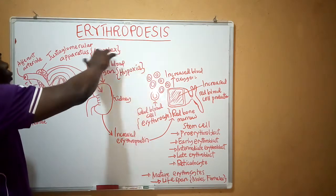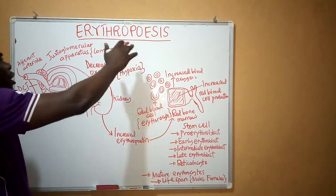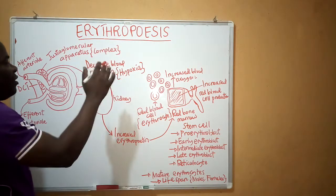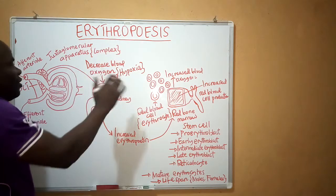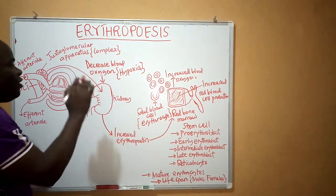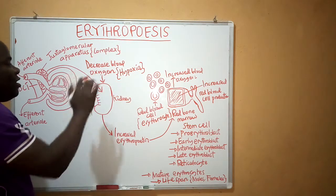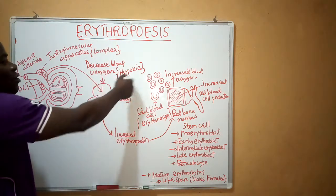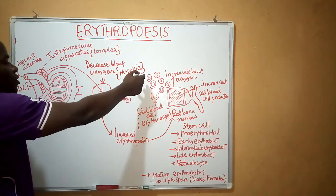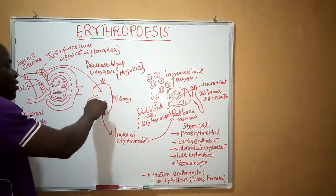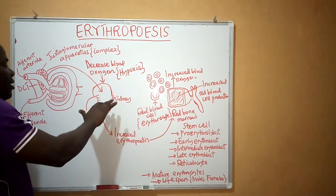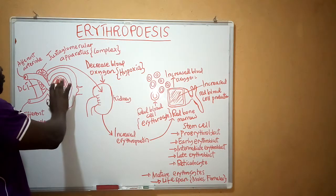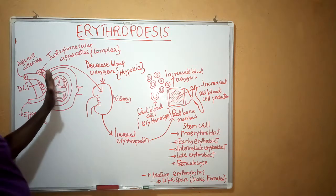The whole process of erythropoiesis is detected within our body when there is low concentration of oxygen directed towards the kidney — when there is a decrease in blood oxygen, the condition known as hypoxia. Once the concentration of oxygen is decreased, the kidney is going to detect this low concentration of oxygen.